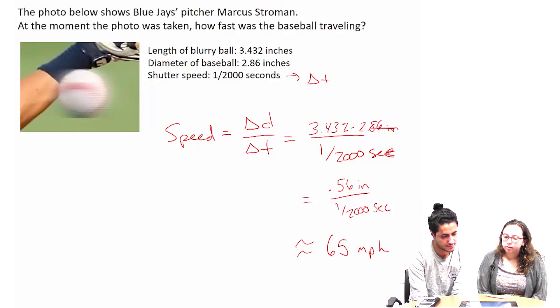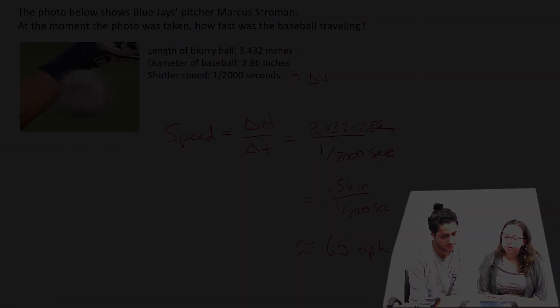In this video, Julian and Alyssa computed the speed of the baseball over an interval of time, but weren't sure how to compute the speed at a particular moment in time. We'll explore how to think about this problem in upcoming videos.